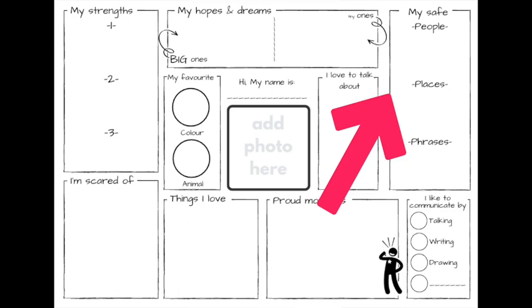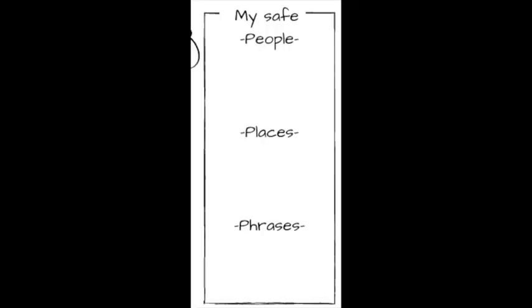We're then going to think about this child's safe people, places, and phrases — super helpful information for us to know, and it can help us understand a little bit more about that child's network of support and where they might go in times of need. Phrases is a big topic — it's about the things a child might need to hear at times of distress. This might be a child who needs to hear things around physiology: 'this will pass, you're not going to feel like this forever', or who needs reassurance: 'it's all right, I'm right by your side.' Whatever that child finds helpful to hear, it's really helpful to note here.